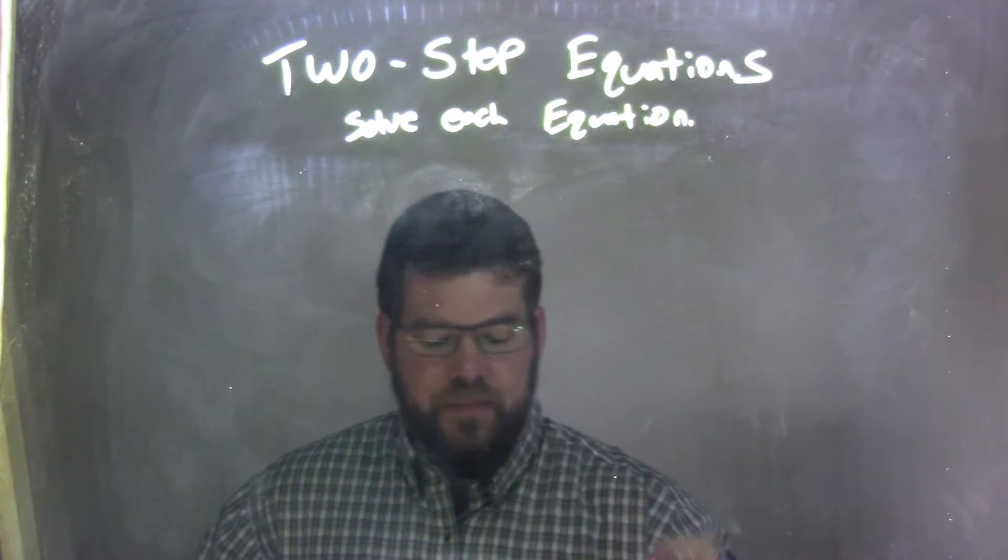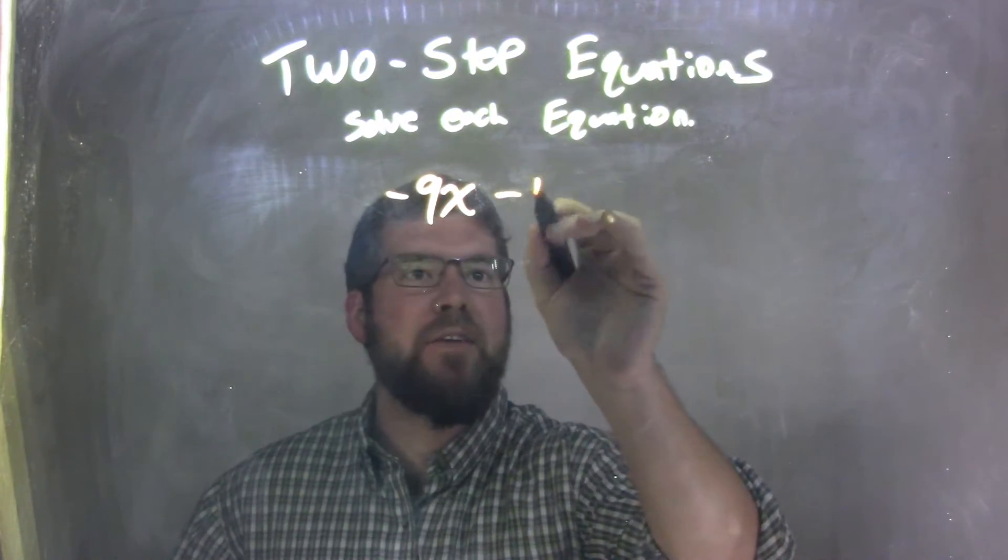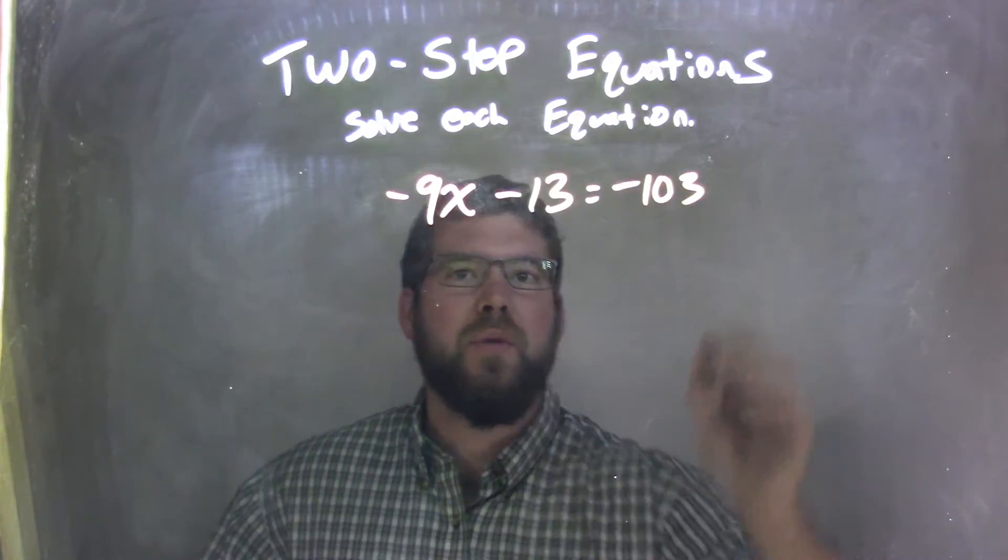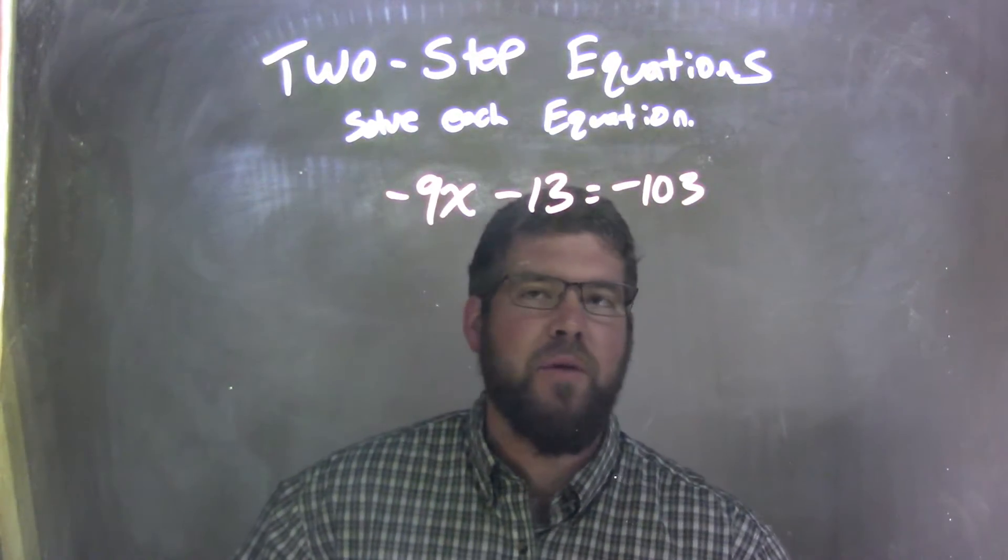So if I was given this equation: negative 9x minus 13 equals negative 103. So negative 9x minus 13 equals negative 103.